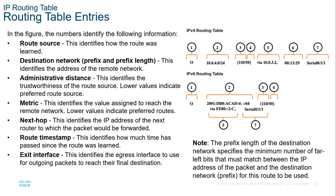How do we decode the routing table? There are seven key elements: One, route source — how did the route get learned? Two, destination — where are we sending it? Three, administrative distance — the trustworthiness; lower value is better. Four, metric — the value assigned to reach the remote network; lower values indicate preferred routes. Five, next hop — the IP address of the next router to which the packet should be forwarded. Six, route timestamp — how much time has passed since the route was learned. Seven, exit interface — which port do we send the data out of? These seven elements are the same whether we're talking IPv4 or IPv6.